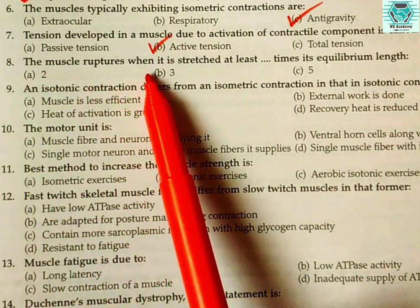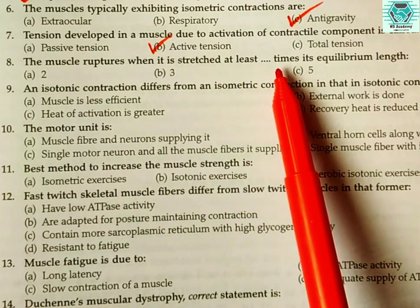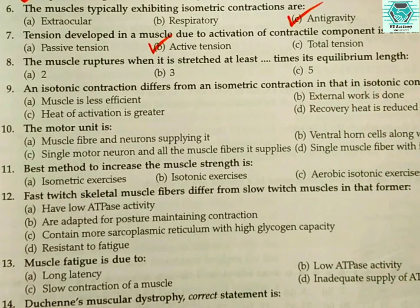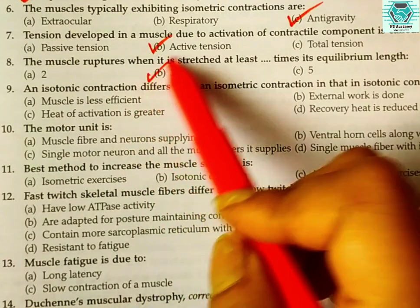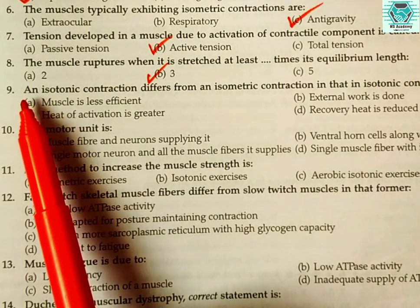Number eight: the muscle ruptures when it is stretched at least how many times its equilibrium length — 2, 3, 5, or 10 times? The answer is 3 — so 3 times its equilibrium length.